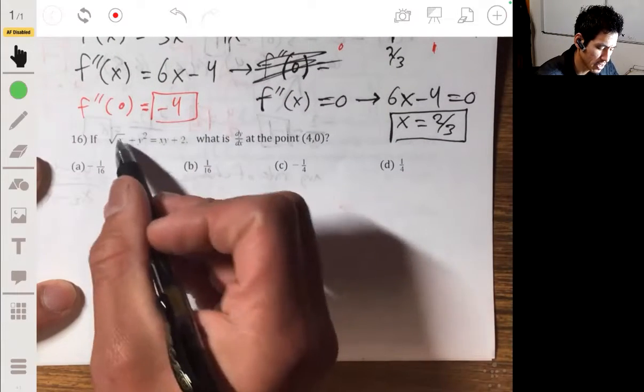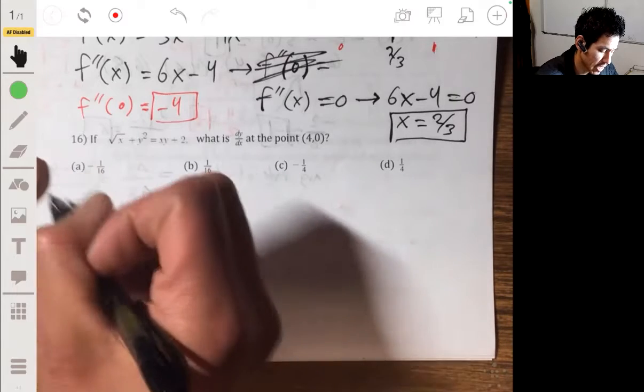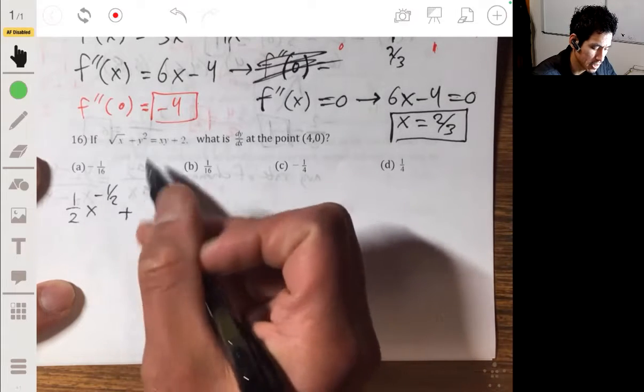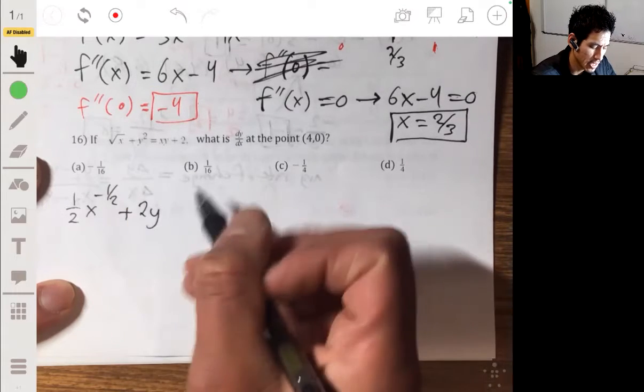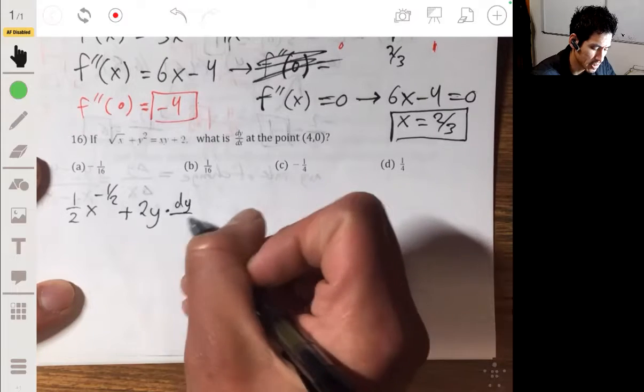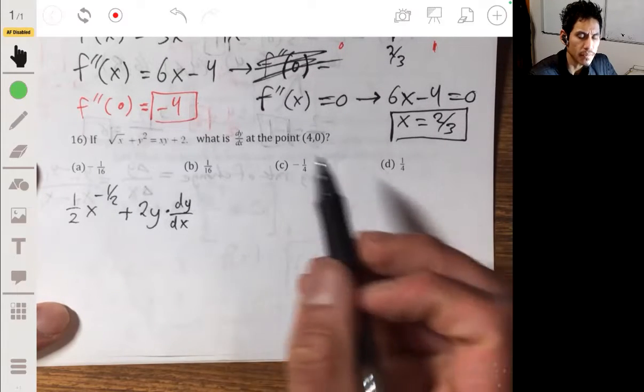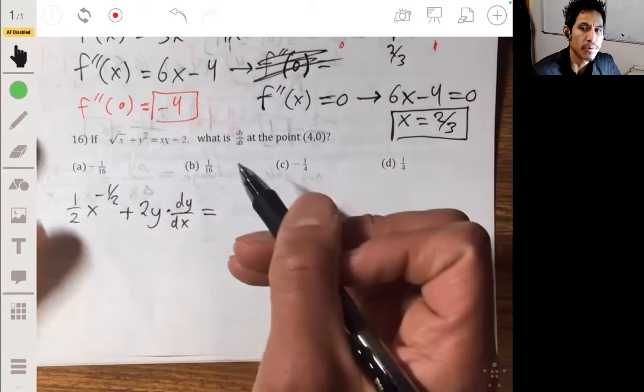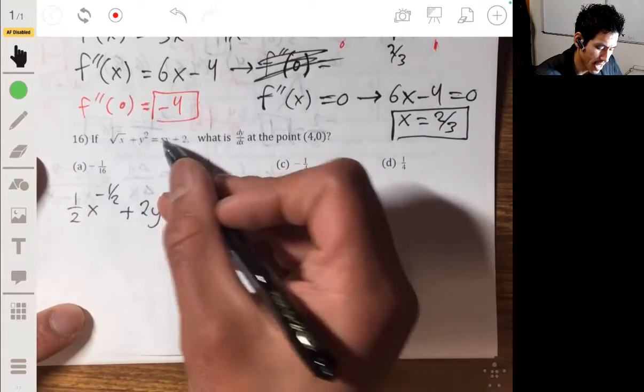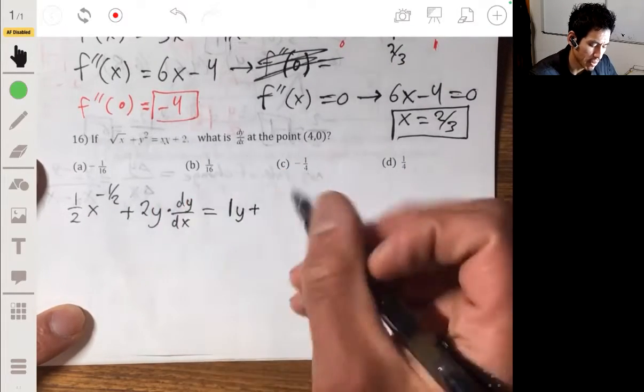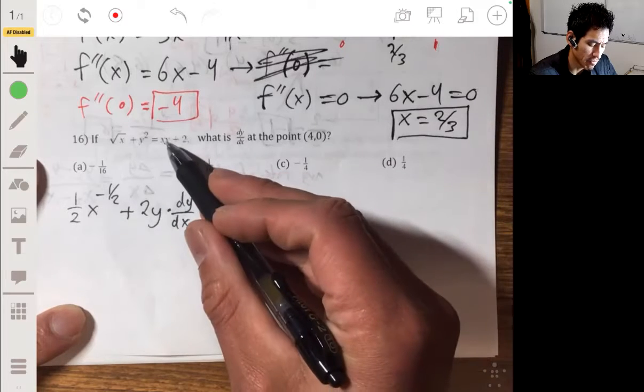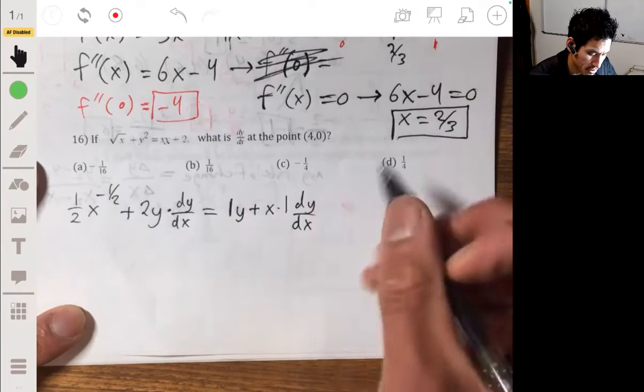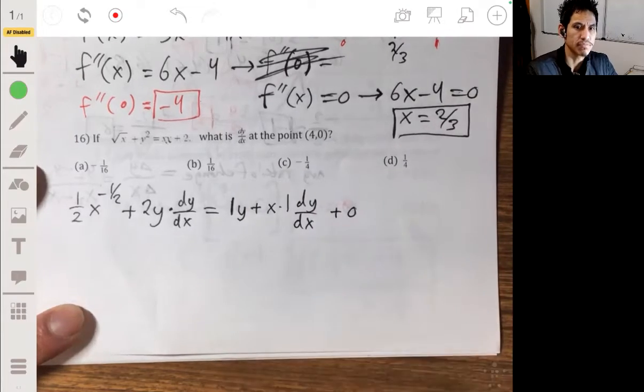So for this we take the derivative of the square root of x, the square root of x is the same as x to the one-half power, so then we have one-half x to the negative one-half power plus the derivative of y squared, 2y, and then here we multiply by dy/dx equals the derivative of xy. So this is we're going to take the derivative using the product rule. So the derivative of x is 1, keep the y constant, plus now we keep the x constant, the derivative of y is just 1, and then here we multiply by dy/dx, and the derivative of 2 is just 0.